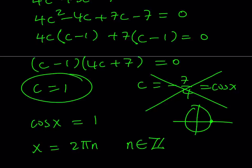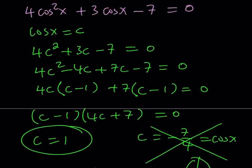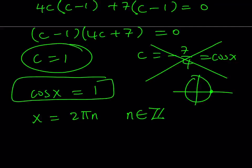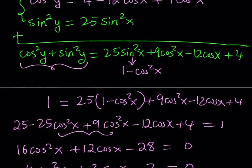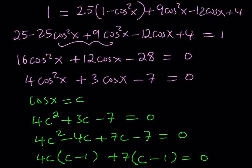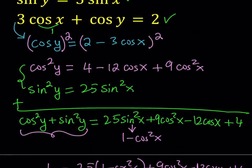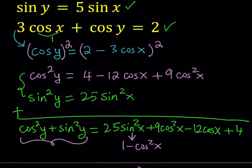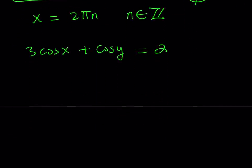We've got to find the y value as well, of course, because this is a system. Since we found that cosine x equals 1, we can substitute that into our equations. The second equation contains cosine x, so let's replace cosine x with 1. We have 3 cosine x plus cosine y equals 2. Since cosine x equals 1, we get cosine y equals negative 1.